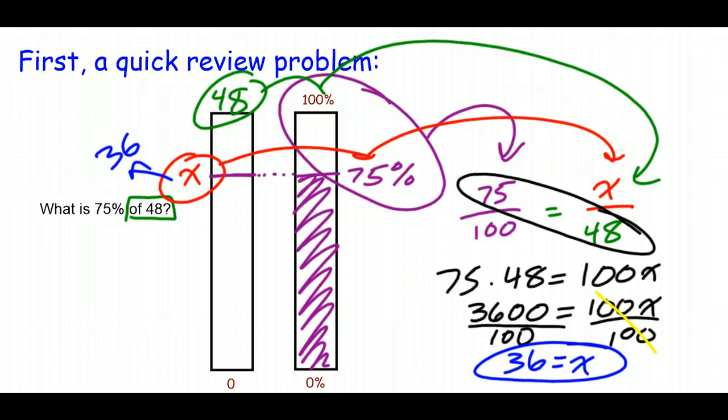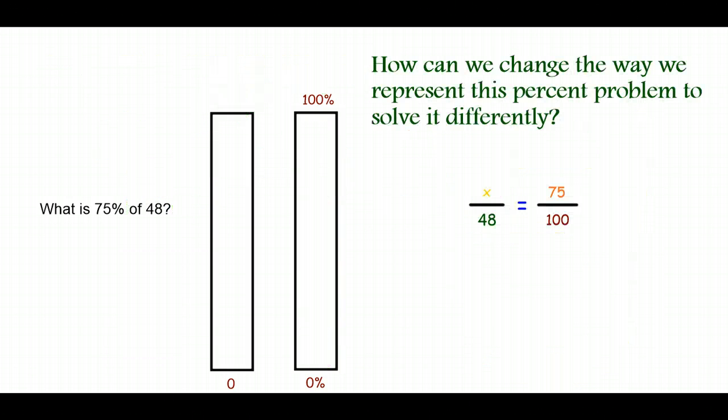Now we want to look at this and think about the proportion we used, and figure out if we can represent it a little bit differently. Pause the video, maybe 30 seconds to a minute, and think of some ways we could potentially change this proportion — X over 48 equals 75 over 100 — to make it a little bit easier to solve or just solved differently.